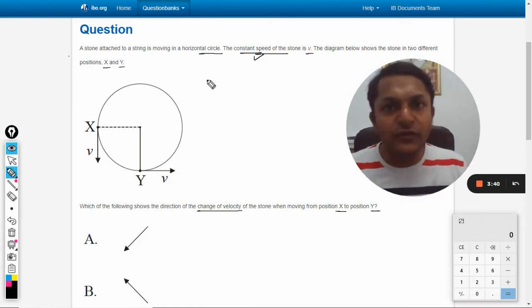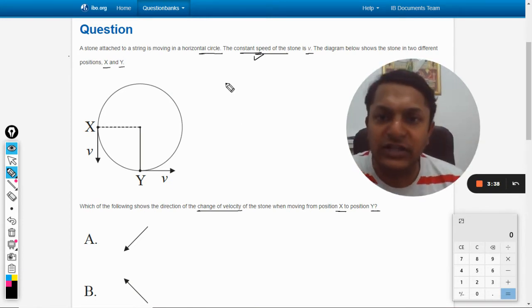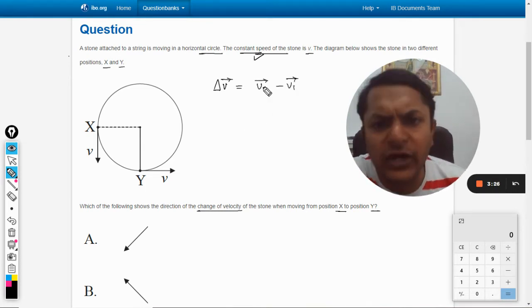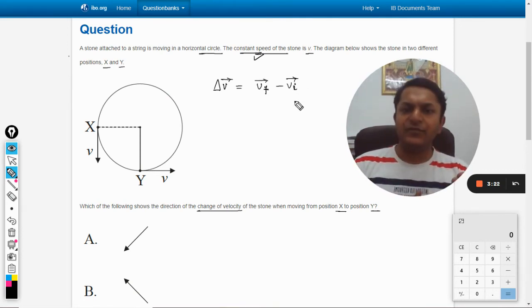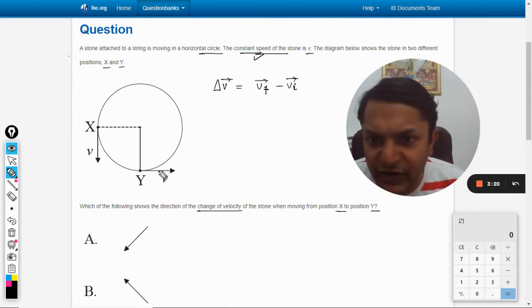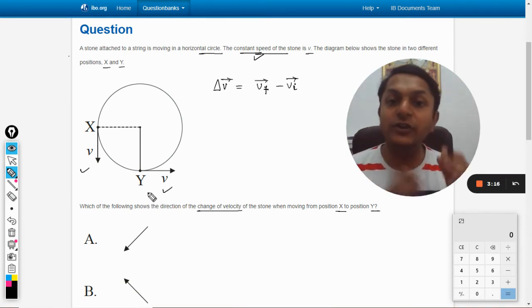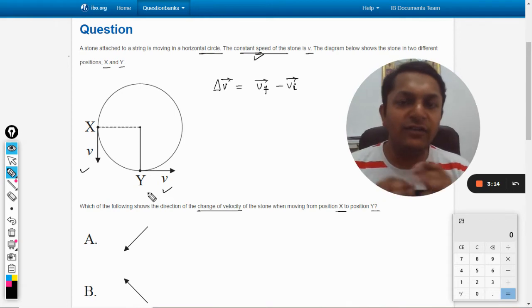So we need to find the change in velocity. It means we are supposed to find delta v vector. How to do that? We will say v2 vector minus v1 vector. This is change in vector. You can say v final and v initial. So final velocity is this and this is the initial velocity.